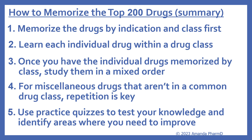Now we'll look at a summary of how to memorize the top 200 drugs. Number one, memorize the drugs by indication and class first. Number two, learn each individual drug within a class. Number three, once you have the individual drugs memorized by class, study them in a mixed order. Number four, for miscellaneous drugs that aren't in a common drug class, repetition is key. And number five, use practice quizzes to test your knowledge and identify areas where you need to improve.